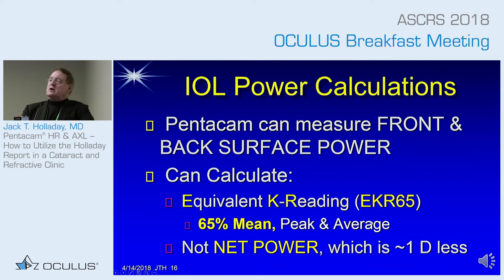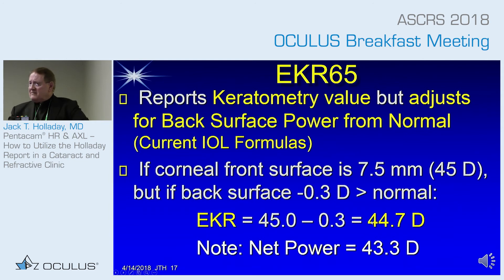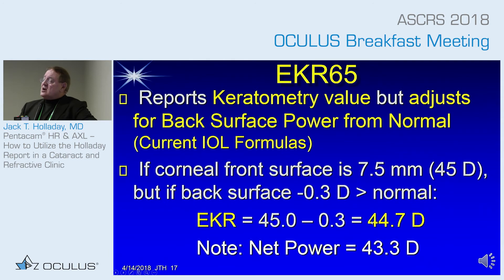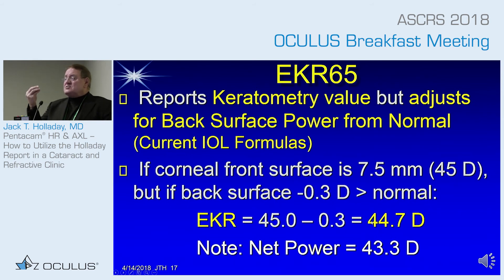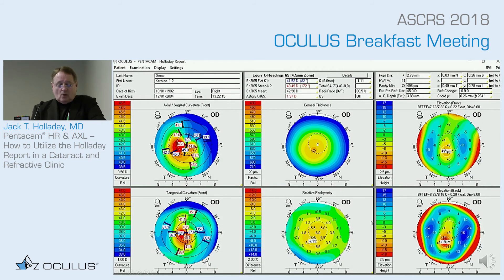For IOL power calculations you want to use the EKR 65 because for irregular corneas it's not a simple average of all powers. In keratoconus, the patient has a bifocal cap on the cornea — extra power centrally. They actually look through the 40-diopter paracentral area for distance and the 46-diopter central area when holding something about 10 centimeters away. Take a near card and have a keratoconus patient hold it 10 to 16 centimeters away — they'll read the bottom line because of that 5 to 6-diopter bifocal cap. The EKR 65 accounts for that paracentral power rather than a simple average.